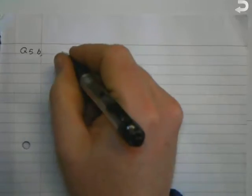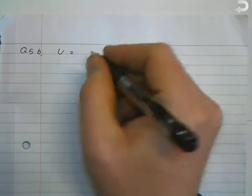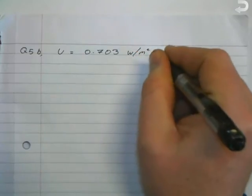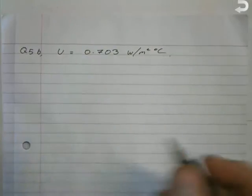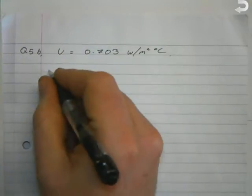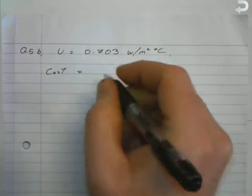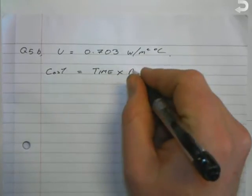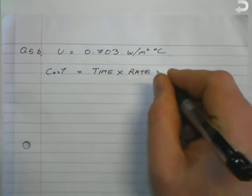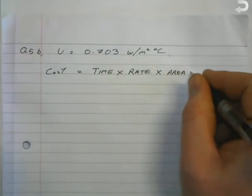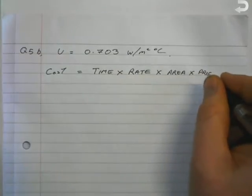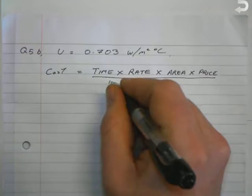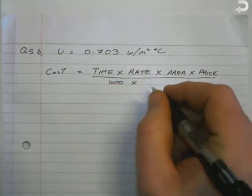To start off this question we use the information obtained in part a. The U-value is equal to 0.703 watts per meter squared degrees Celsius. The next information we'll use is a formula for calculating the cost. The cost formula is as follows: cost is equal to time multiplied by rate multiplied by area multiplied by price.